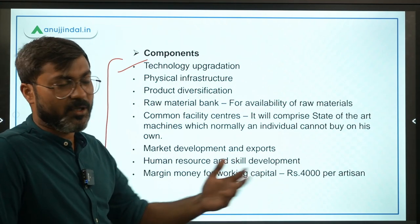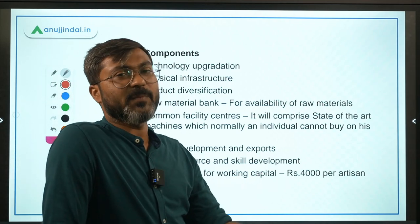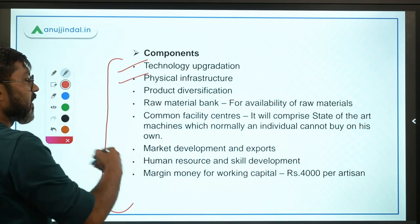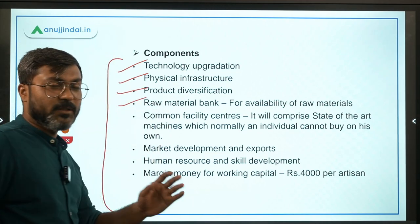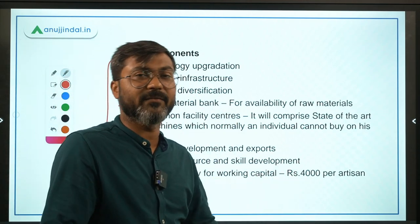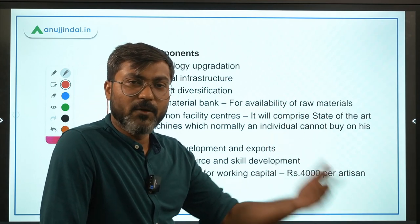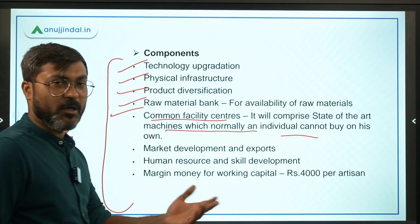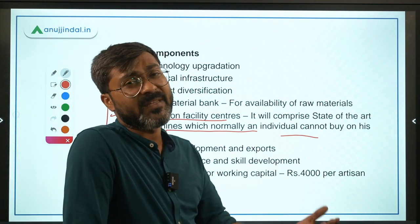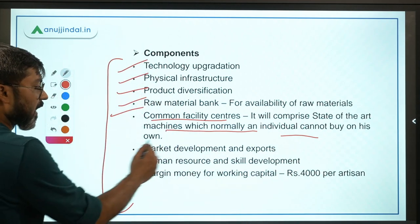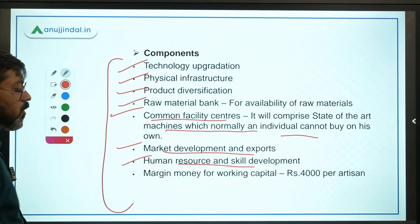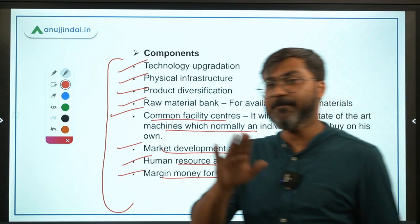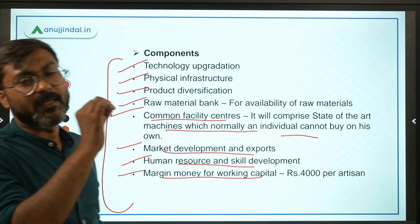Common facility centers will be established comprising state-of-the-art machines that individual artisans normally cannot buy. Other components include market development, export development, human resources and skill development. There is also provision of margin money for working capital — rupees 4,000 per artisan. This margin money is given to support artisans with their working capital needs.